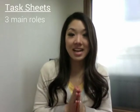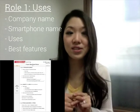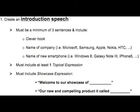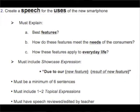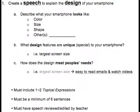As you can see in my task sheet for this lesson, I've separated the three main sections — uses, design, and innovation — into three main roles. This is ideal for groups of three, but if you have groups of four you should make some modifications to the task sheet. For the first role, entitled 'Uses,' the student must start the presentation with a clever introduction that covers the name of their smartphone company and the name of the new smartphone their group designed. A description of the uses and best features of the smartphone is to follow the introduction.